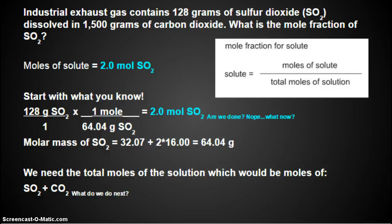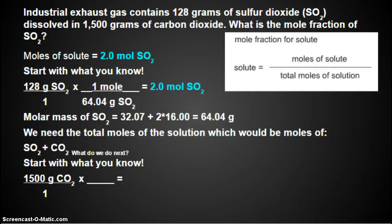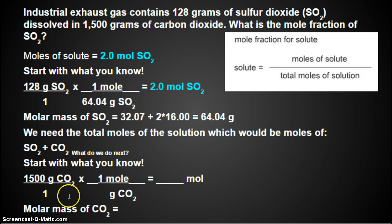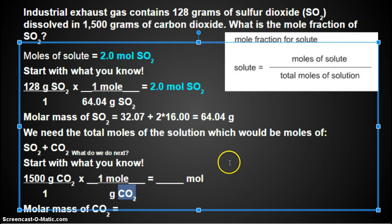What do we do next? Next, we start with what we know. So we know that we have 1,500 grams of CO2. And what's going to go on the bottom of our next fraction? We've got to cancel. And what's the unit of our final answer going to be?